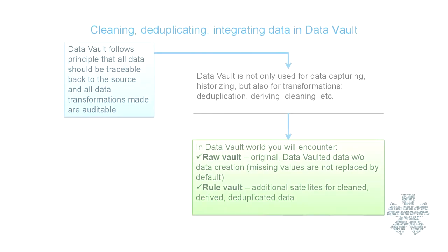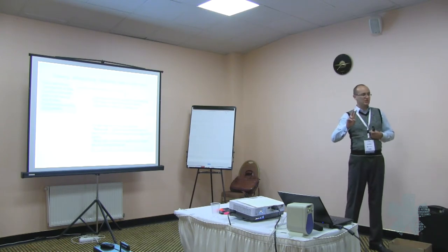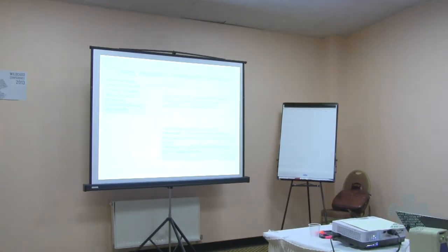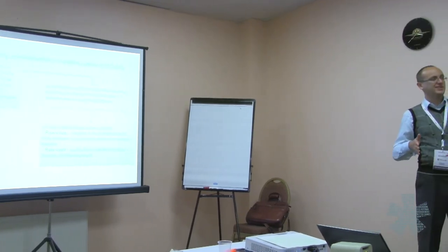Cleaning, de-duplicating, and integrating data in Data Vault. Data Vault architecture states that you should be able to track all the changes you have made to the data — your data must be auditable. This means the whole construct is not only capturing data from the source, but also tracking all changes made to the data. If you are de-duplicating customers, you create a new link which states these two customers are the same. If you are cleaning address information, you have the original address satellite and you will have a converted address satellite with cleaned data ready for analysis. In Data Vault, people usually operate with two terms: raw Data Vault — data acquired from systems without transformations — and business Data Vault, which is where you store all the transformations made to the data.